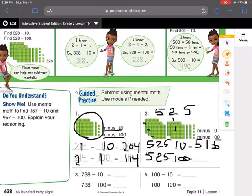In the second question, am I subtracting, I'm subtracting 525 minus 100. Am I subtracting anything in the ones place value? No. So that 5 gets to stay.